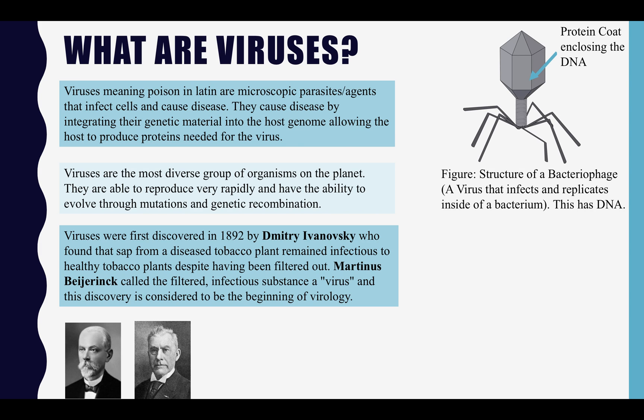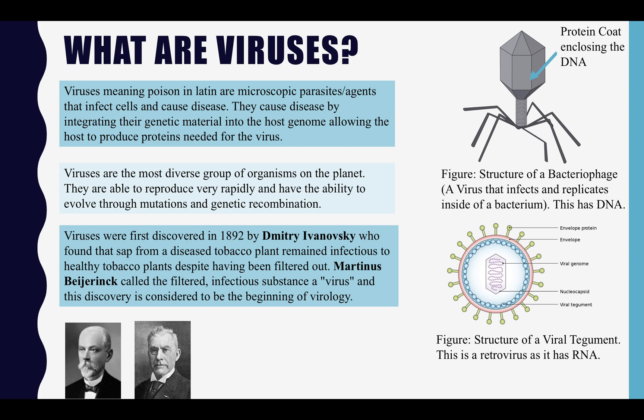Viruses are very diverse. The two main structures are that of a bacteriophage, which is a virus that infects and replicates inside of a bacterium. This has DNA enclosed within a protein coat, also known as a capsid. There is another structure known as a viral tegument. This is a retrovirus, and it is involved in affecting the immune system. This has RNA enclosed within the envelope protein.